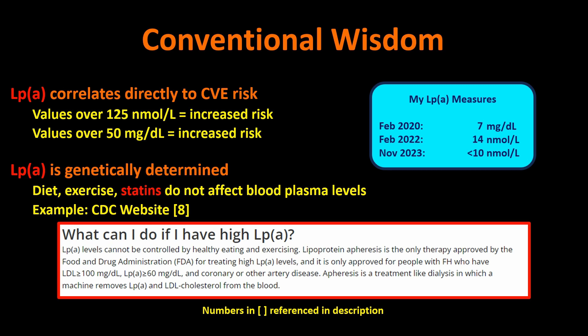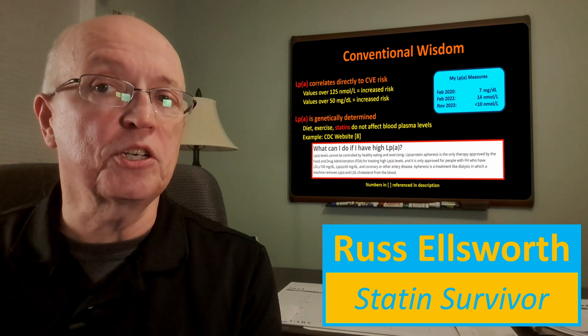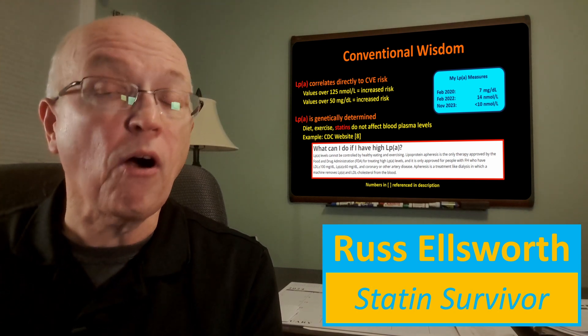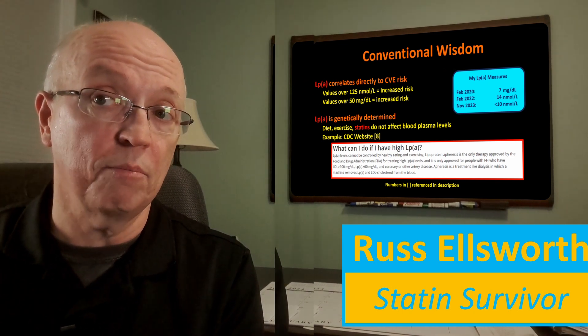Lipoprotein apheresis is the only therapy approved by the FDA for treating high levels. The criteria for who qualifies includes: familial hypercholesterolemia, LDL levels over 100, LP little a over 60 mg per deciliter, and coronary or other artery disease — so you'd actually have to have known disease. Apheresis is very much like kidney dialysis: your blood is filtered through a machine and returned to you with the particles of concern scrubbed out.